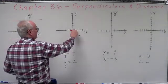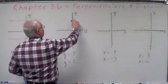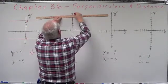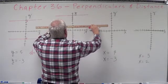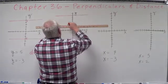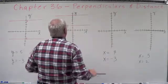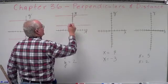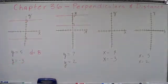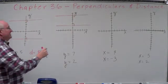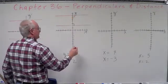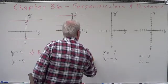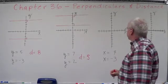Next, we've got Y equals 7 and Y equals 2. Again, those lines are parallel to the X axis, which makes them perpendicular to the Y axis. All we have to do is find the distance between those two on the Y axis — that would be 5. So our distance on this one equals 5. These are the simple ones.